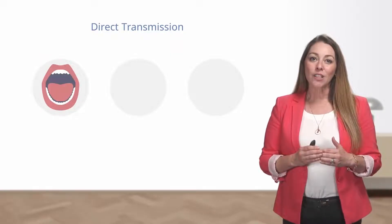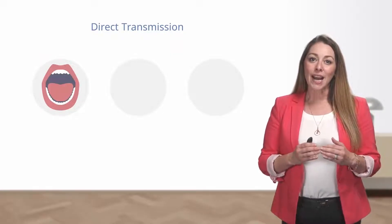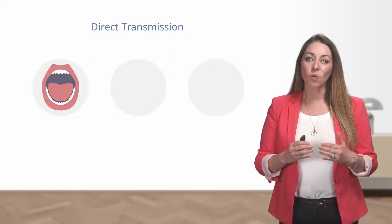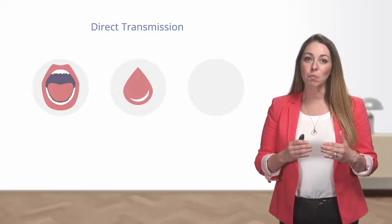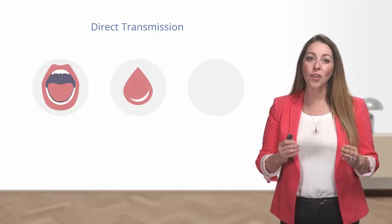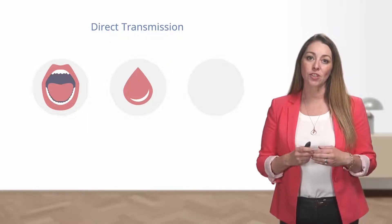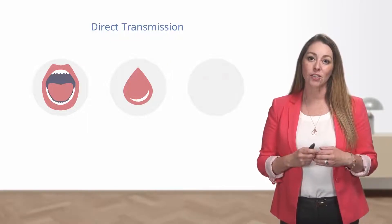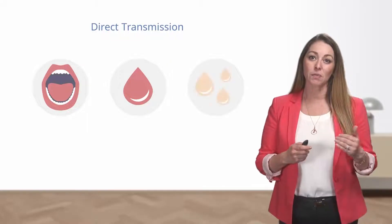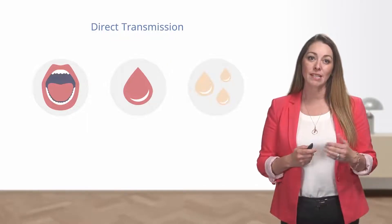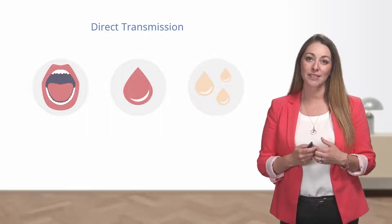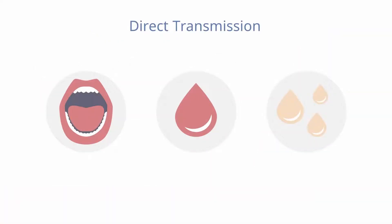Direct contact includes contact with oral secretions, blood, or other potentially infectious fluids such as drainage from a skin lesion, semen, or vaginal secretions. This can happen as a result of touching, biting, kissing, or sexual intercourse.